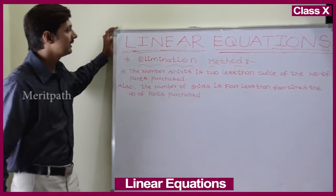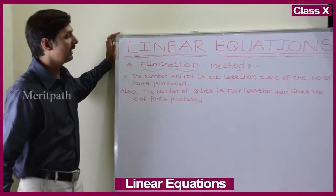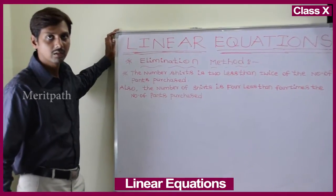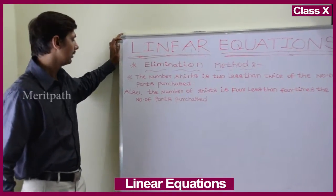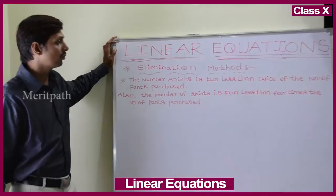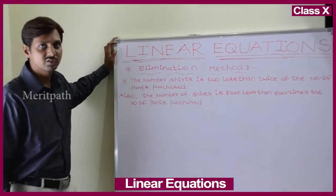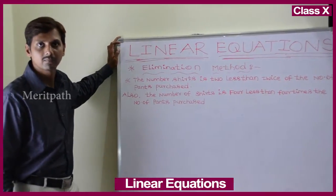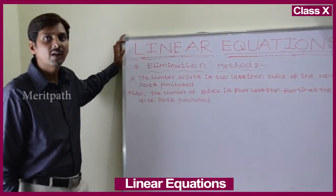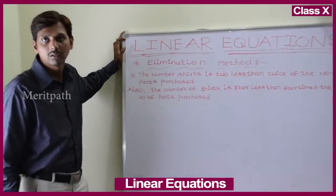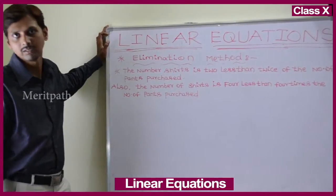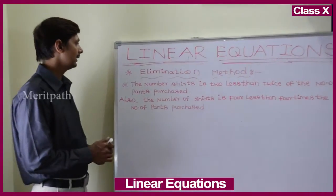The number of shirts is 2 less than twice the number of packs he purchased, and the number of shirts is 4 less than 4 times the number of packs he purchased. We need to find out how many packs and how many shirts he purchased.